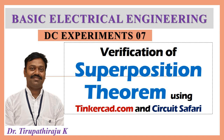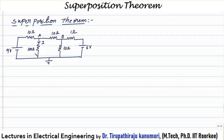Hi all, today we are going to see the verification of superposition theorem using both Tinkercad as well as Circuit Safari. For that I am taking a circuit where two sources are there — 9 volts and 6 volts — supplying one load of 100 ohms resistance. I want to find the current through this 100 ohms as well as the voltage across this resistance.